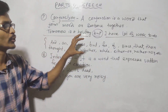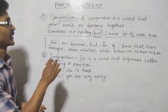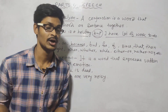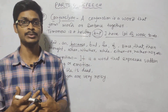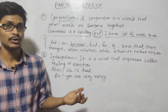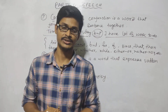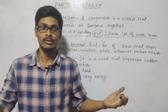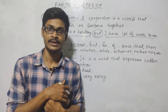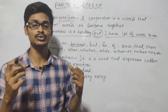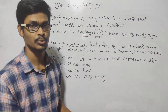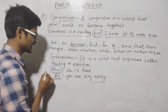Next is the interjection. It is a word that expresses sudden feelings or emotion. For example, 'Wow, this place is so beautiful' — 'wow' expresses sudden surprise. If you get a great result you might say 'wow!' Other examples: expressing sadness or fear suddenly, or saying 'alas, he is dead' — these are interjections expressing sudden emotion.